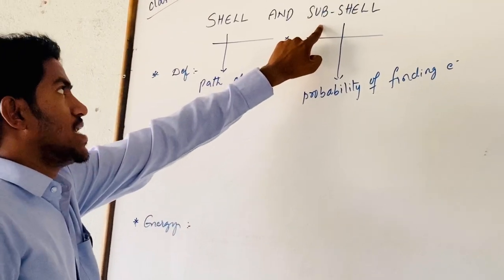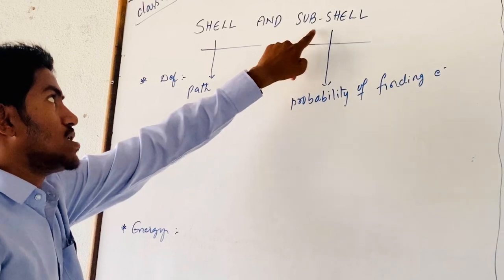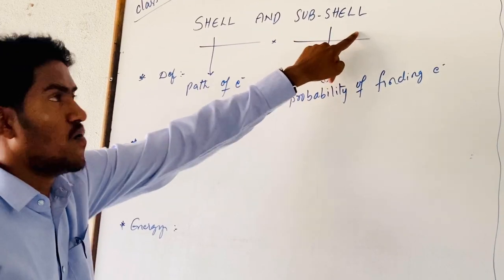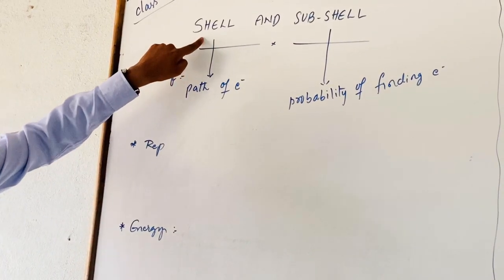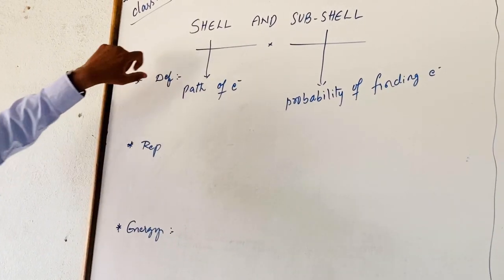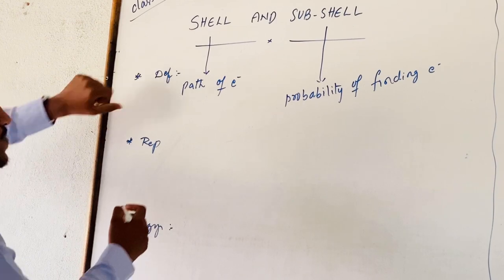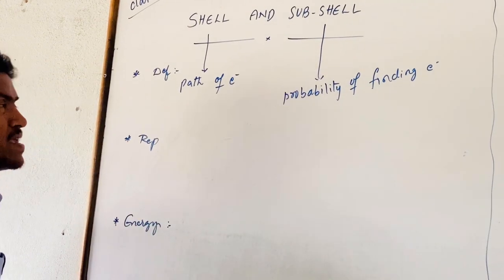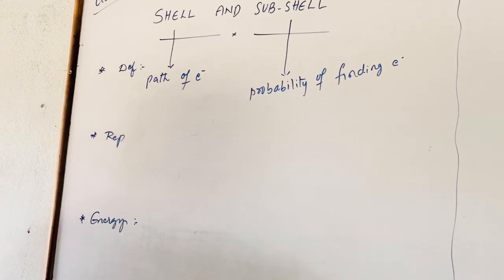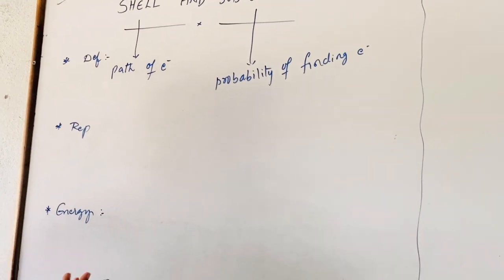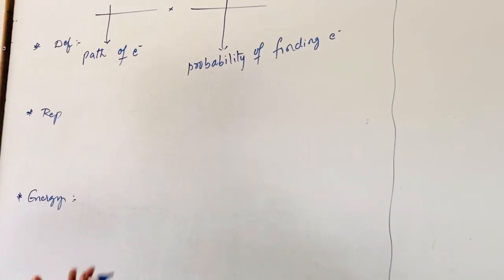Subshell can also be called an orbital, while the shell's another name is Rb. The subshells are represented as S, P, D, and F.